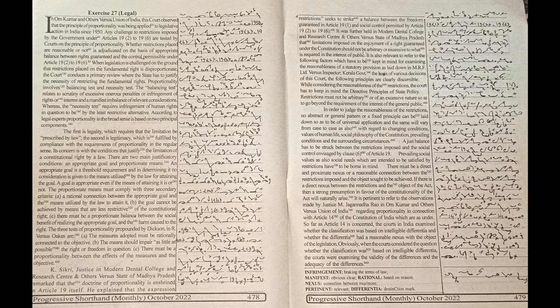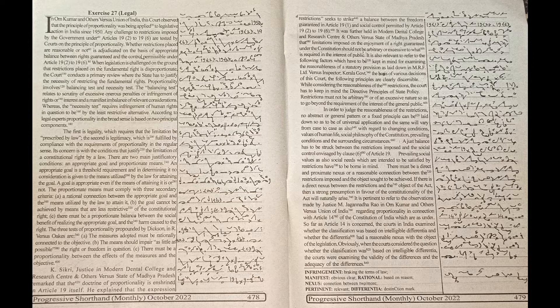no abstract or general pattern or a fixed principle can be laid down so as to be of universal application, and the same will vary from case to case as also with regard to changing conditions, values of human life, social philosophy of the constitution, prevailing conditions and the surrounding circumstances. A just balance has to be struck between the restrictions imposed and the social control envisaged by Clause 6 of Article 19.